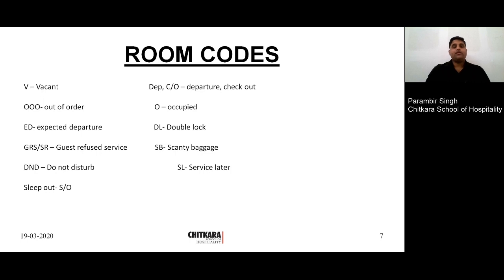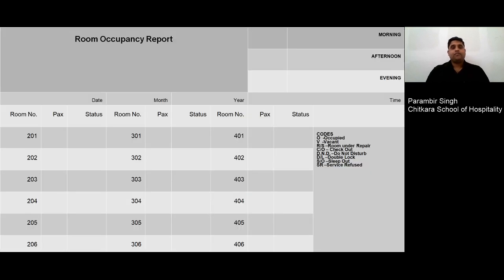The next slide shows the room occupancy report format. At the top right corner, you can see the shifts — morning, afternoon, and evening. For whichever shift and at whatever time you are making the report, take the appropriate section. Then write the date and the time — time is very important so you can check when the report was made. There are three columns: room number, pax, and status, organized floor-wise. On the right side, the codes are written and need to be filled in.